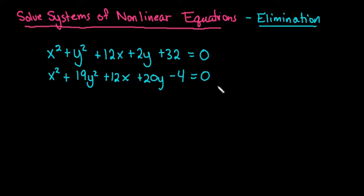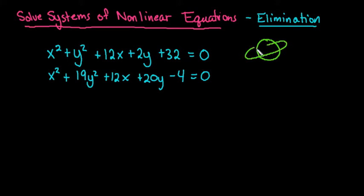The first equation happens to be a circle and the second one is an ellipse. I know the first one is a circle because the coefficients in front of x squared and y squared are the same. For the second one, the coefficients are different, making it an ellipse. This tells us that at most we could have four solutions.